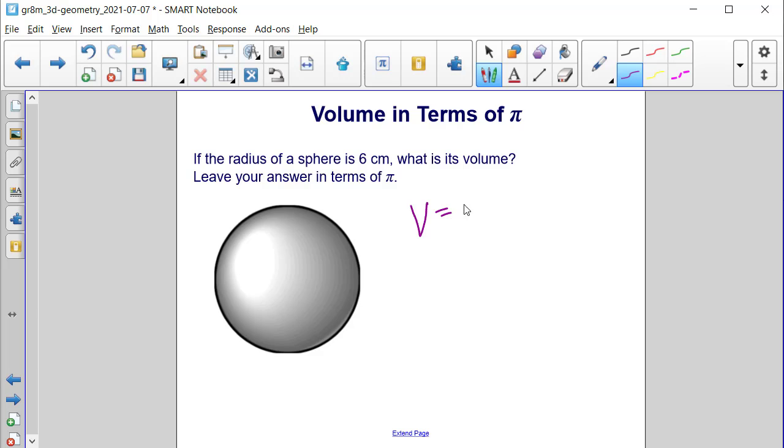We know that the volume of any sphere is 4 thirds times pi times the radius cubed. We're leaving pi in our answer, so we're going to keep it in our formula. And we still have the 4 thirds. But then our radius is 6. So let's cube that.